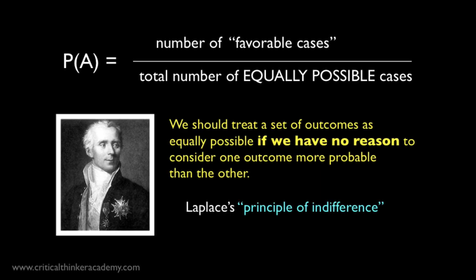The French mathematician Pierre-Simon Laplace famously tried to clarify this idea. He says that we should treat a set of outcomes as equally possible if we have no reason to consider one more probable than the other. This is known as Laplace's principle of indifference, though it was John Maynard Keynes who actually coined this expression in the 1920s. The idea is that if we have no reason to consider one outcome more probable than another, then we shouldn't arbitrarily choose to favor one outcome over another. Doing that would be irrational.